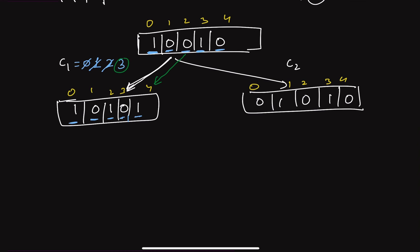Now for converting to '10101' using counter c2: at index zero, we have '1' but the string starts with '0' — wait, it should be '1' here, so no increment. At index one, '0' matches '0' — no increment. At index two, '1' should be '1' — no increment. At index three, '0' should be '0' — no increment. At index four, '0' should be '0' — no increment. Wait, c2 equals 2. So the minimum of 3 and 2 is 2, which is the answer.